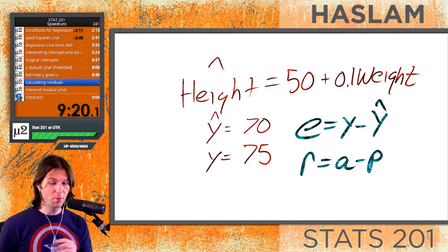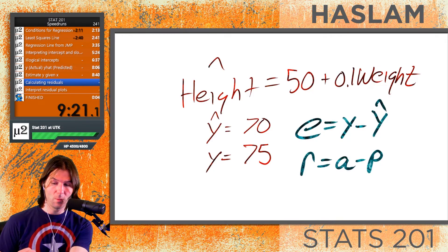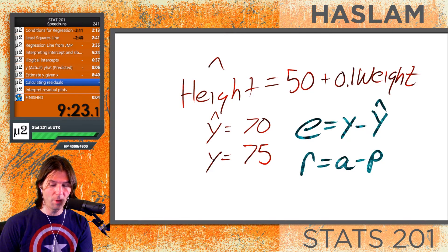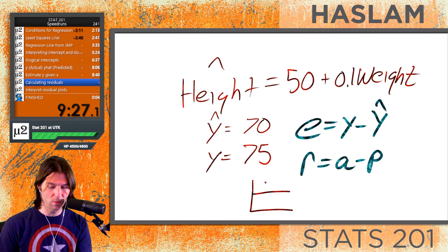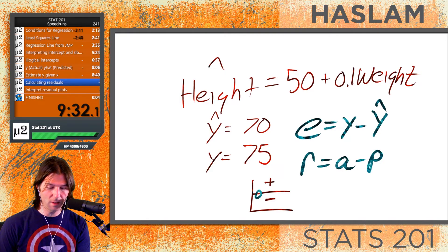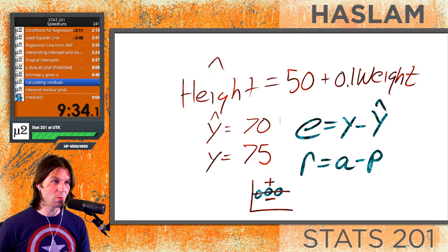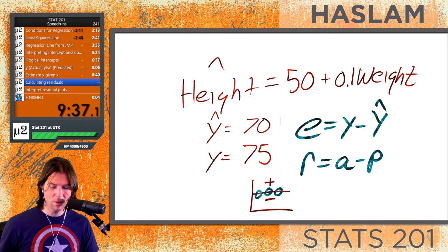When thinking about a residual plot, all points above the line have positive residuals, all points below the line have negative residuals, and points on the line have a residual of zero. Residual plots show us all of these residuals visually.